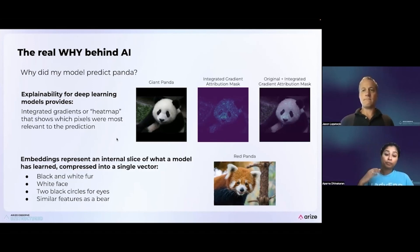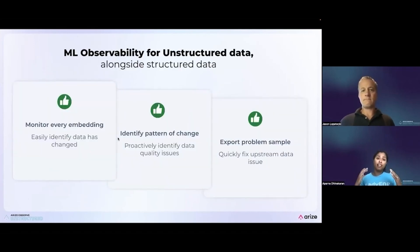And so what we launched really is leveraging embeddings to be able to do observability for unstructured data. What we've launched monitors every single embedding, identifies patterns of change across these embeddings, and then provides tools to be able to export problematic samples to use for either better labeling or better data quality measures if the data itself needs to be fixed.